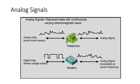In a communication system, data are propagated from one point to another by means of electromagnetic signals. Both analog and digital signals may be transmitted on suitable transmission media. An analog signal is a continuous electromagnetic wave that may be propagated over a variety of guided and unguided media.